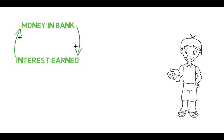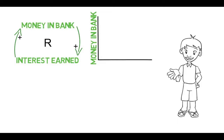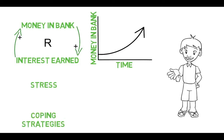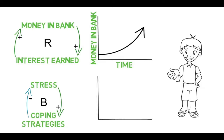Loops are either reinforcing or balancing. This is a reinforcing loop, because all else being equal, the elements continue to move in the same direction — either rising or falling over time. The story of this loop describes the money in the account going up over time. Here's another example: if the amount of stress goes up, the coping strategies to deal with that stress go up, causing the amount of stress to go down. With the stress now low, coping strategies are reduced, thus allowing the stress level to go back up again. This is a balancing feedback loop, because all else being equal, the elements either oscillate or seek a goal — the story describes how stress can go up and down as an oscillation.